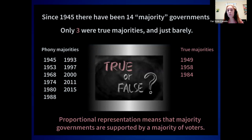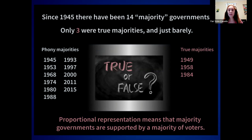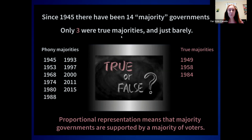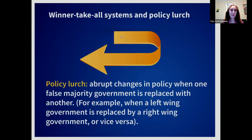Since 1945, only three of our majority governments actually got 50 percent of the vote, and the last one was in 1984. We've long since outgrown the two-party system, but we're stuck with a voting system that was really designed for two parties.